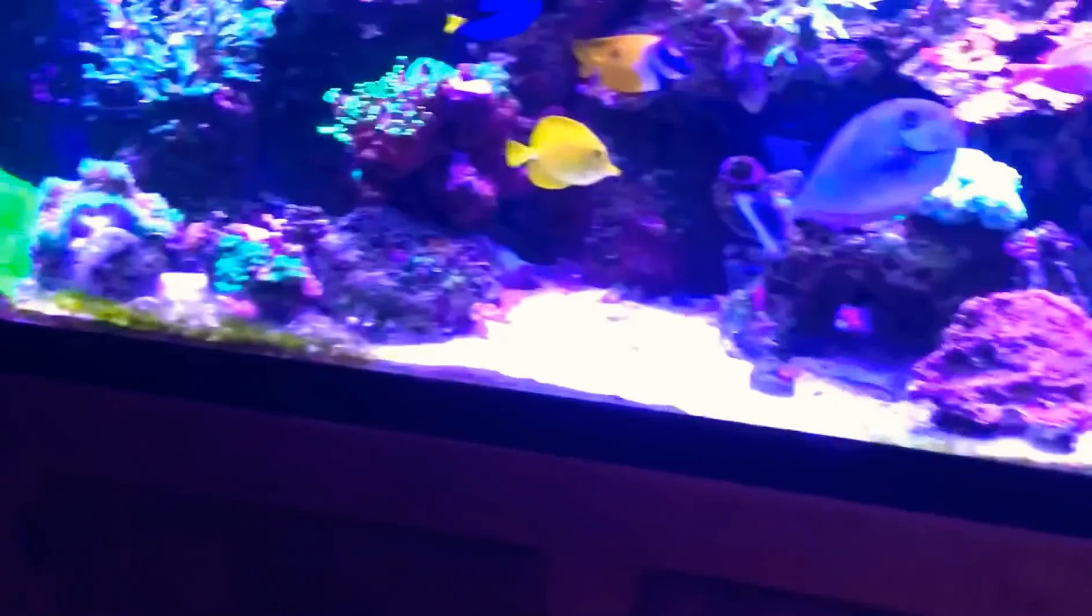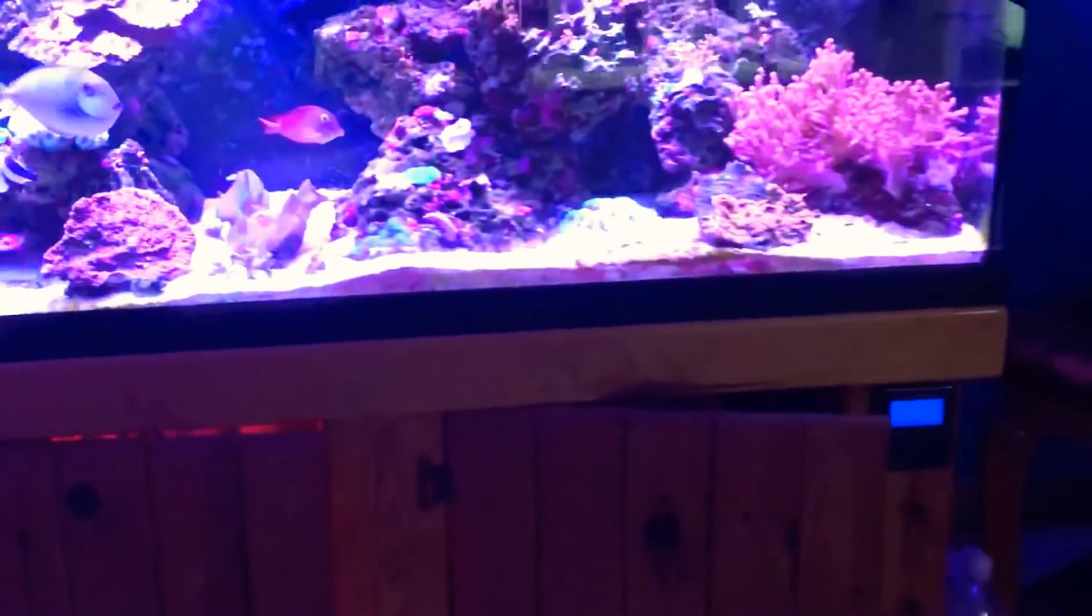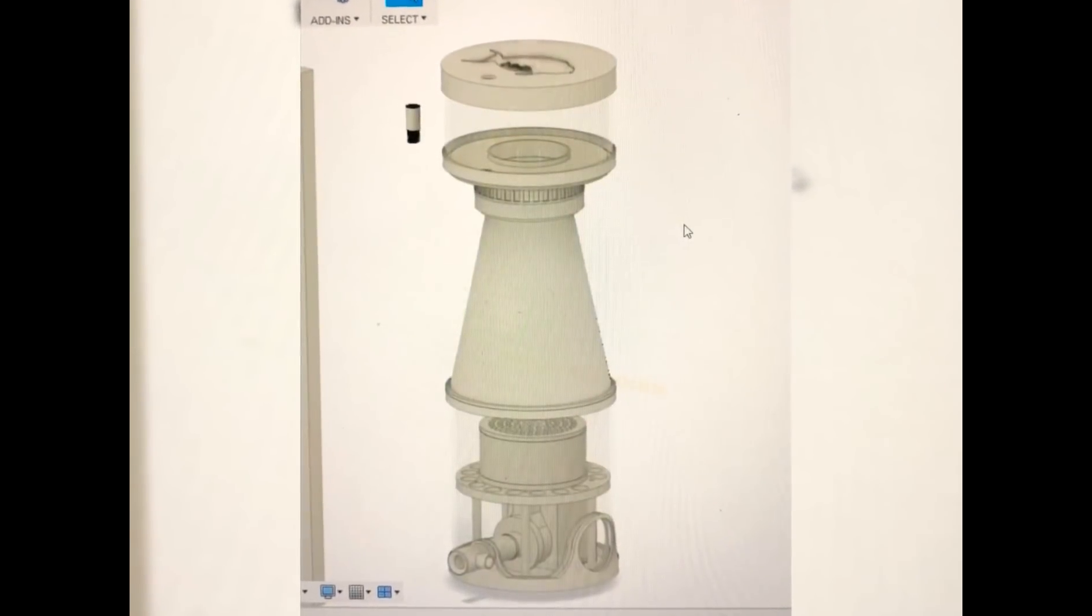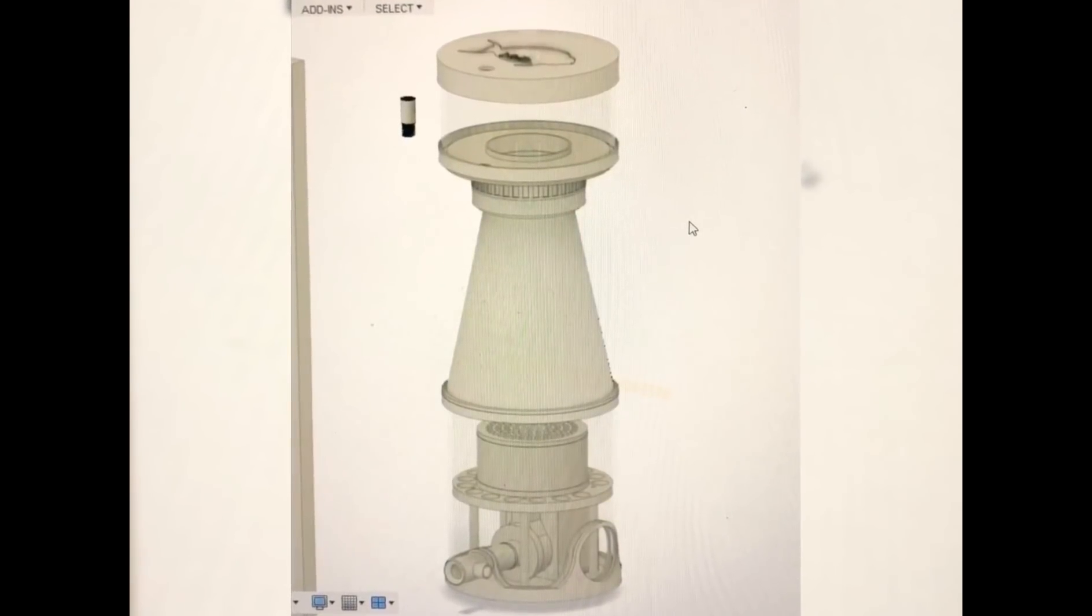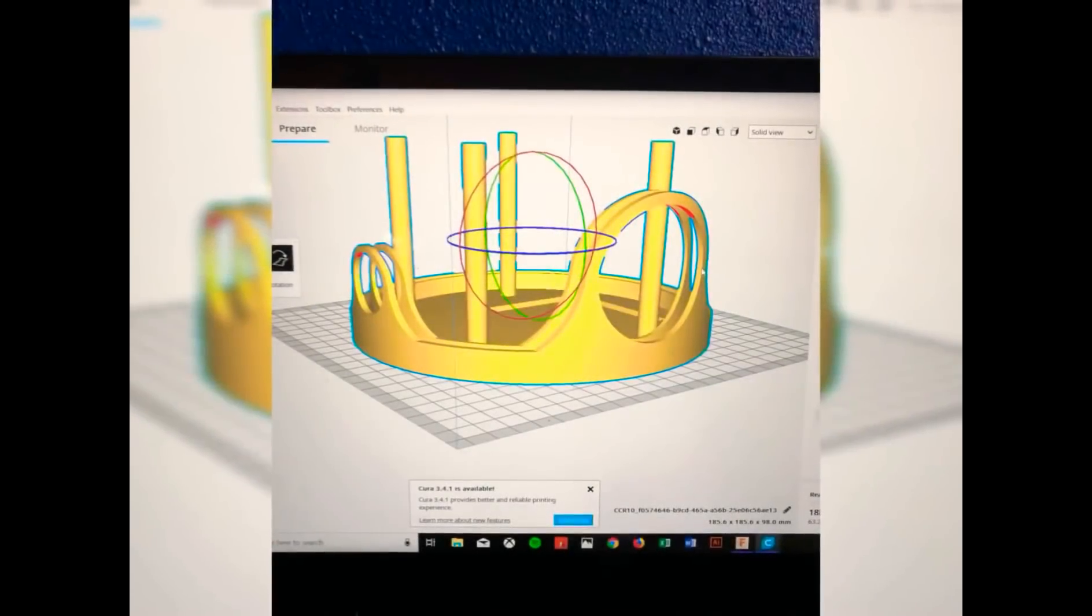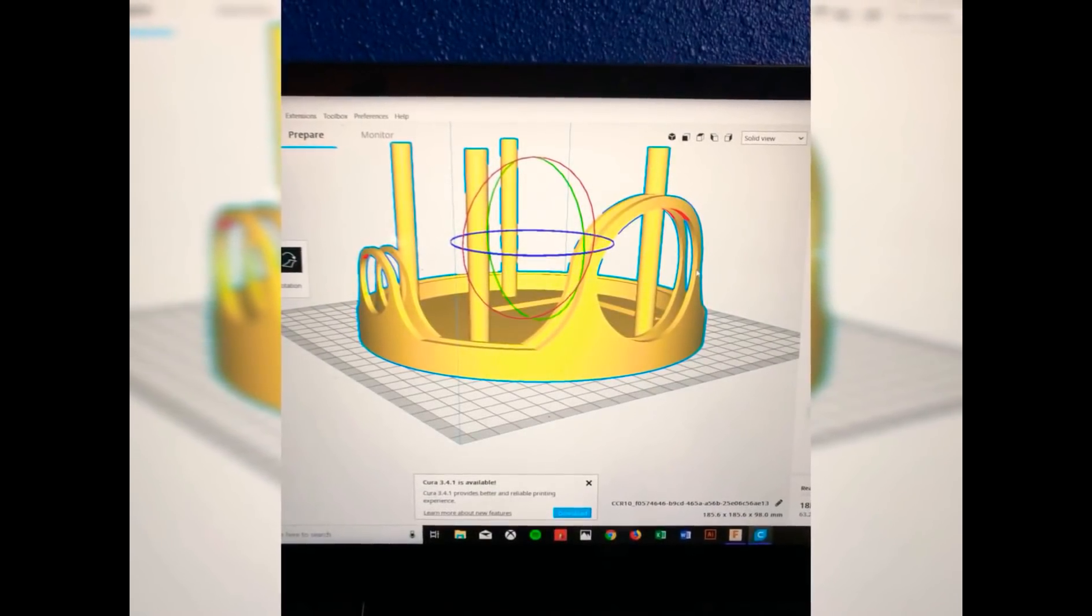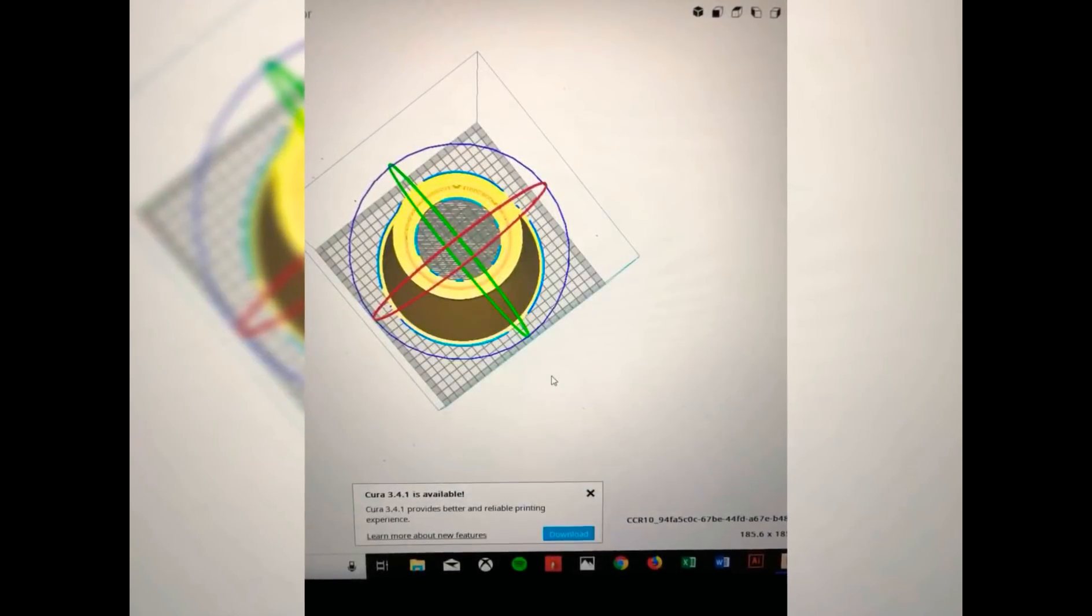This first photo is actually the CAD program Autodesk, the model that I generated and made over time. And then here's the slicing program called Cura, which basically just takes that CAD file and makes it into g-code, which is the language for all 3D printers.